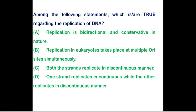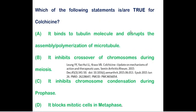Next is both strand replicate in discontinuous manner. This option is wrong. And option D says that one strand replicate in continuous, while other strand replicate in discontinuous manner. Option D is correct. So option A is correct, option B is correct, and option D is correct. If you want to change this option, you can give a clear cut explanation in the comment section so that it will be benefiting many group of students.